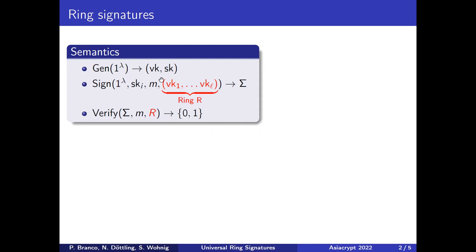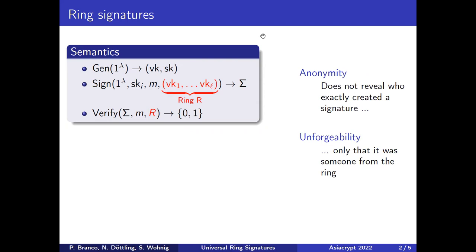Ring signatures are signatures where instead of using one key for signing and verification, you use a whole ring of them. The security notions you get are anonymity and unforgeability. For a verifying signature, you want to learn that someone in that ring has made it, but you don't want to learn who exactly. The first ever use case for this was whistleblowing.